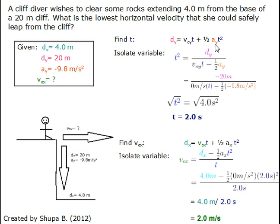We will isolate for t squared, substitute our values in here, and then take the square root of t squared and 4.0 seconds squared so that our time is 2.0 seconds.